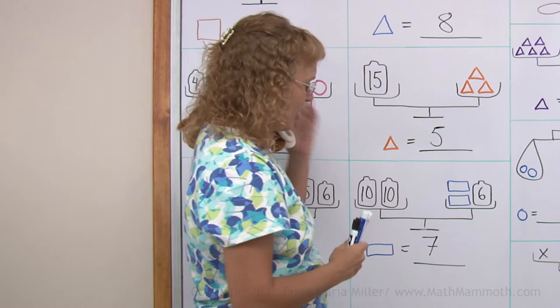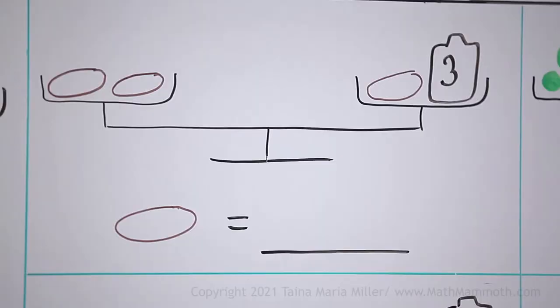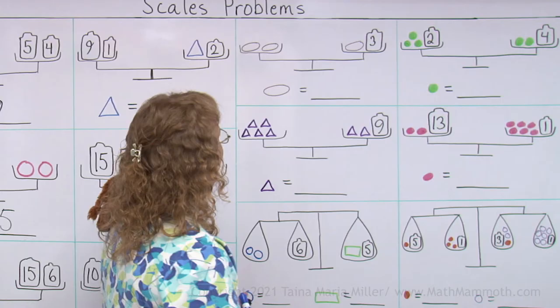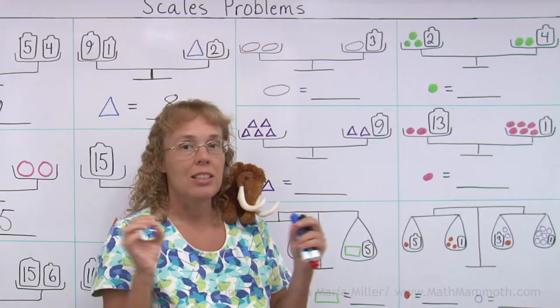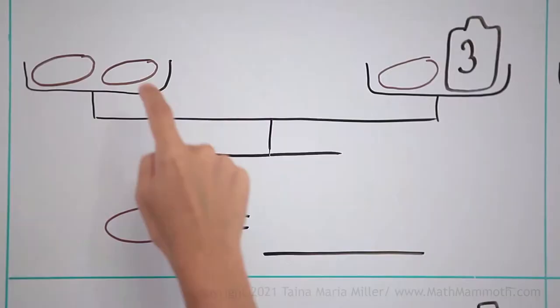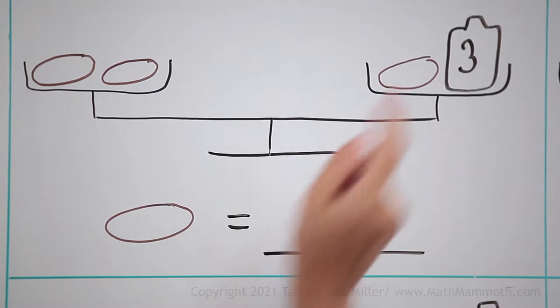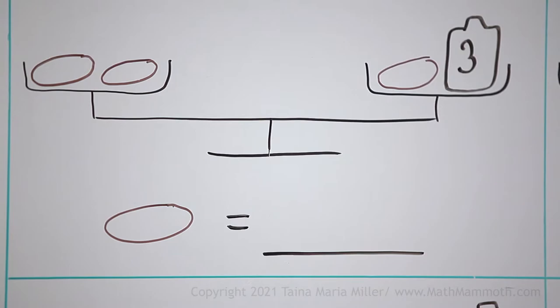Now over here is our first time of having the unknown on both sides different. That's something new. And I'm going to show you a little trick that makes it much easier. If we take away from both sides the same thing, then the pan balance is still going to be balanced. If I take away one oval from both sides, then it will still be balanced, because I took away the same thing from both sides.